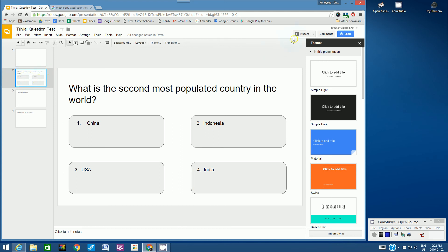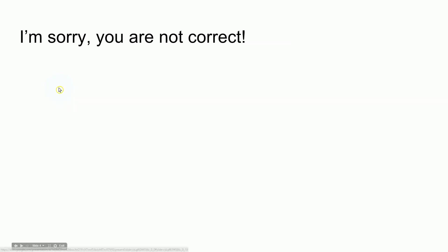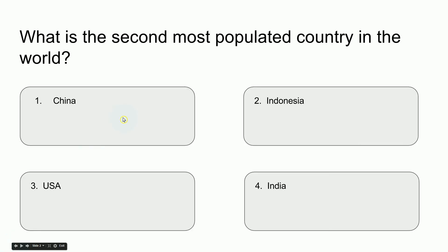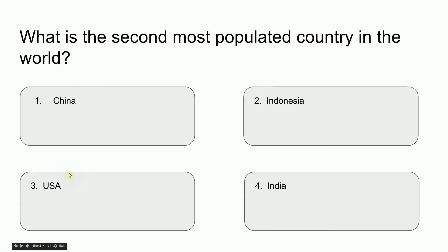I'm going to start on slide two and let's test it. Let's go to Present. Here's my question: what is the second most populated country in the world? If I put my mouse over the first answer, China, I should get a hand icon indicating there is a link. If I click on it, it goes to the slide that says I'm sorry, you are not correct. Going back, I try the second answer, Indonesia — and it correctly goes to I'm sorry, you are not correct. Let's try USA — it looks like USA does not have a link. Something went wrong there, so let's check that.